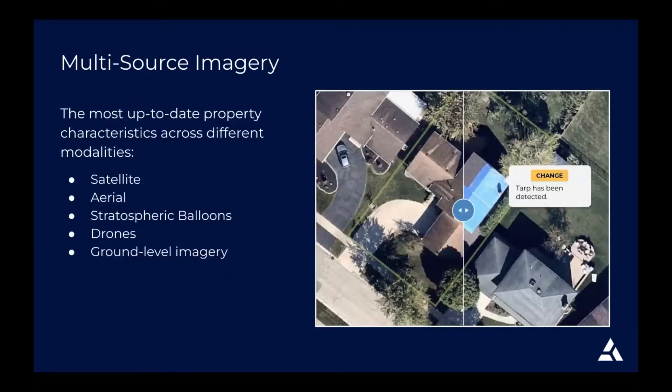The first important piece is multi-source imagery. We take imagery from a lot of different sources: satellite, aerial, stratospheric balloons — my favorite, a super cool data source — drones, and ground-level imagery. When we're trying to build consistent and deployable analytic pipelines on top of multiple imagery sources, it's really difficult because every single imagery provider has a slightly different way of exposing their coverage data and how you access the imagery.